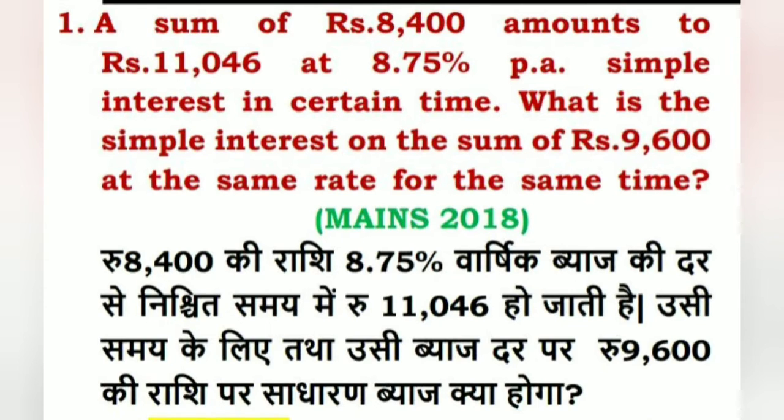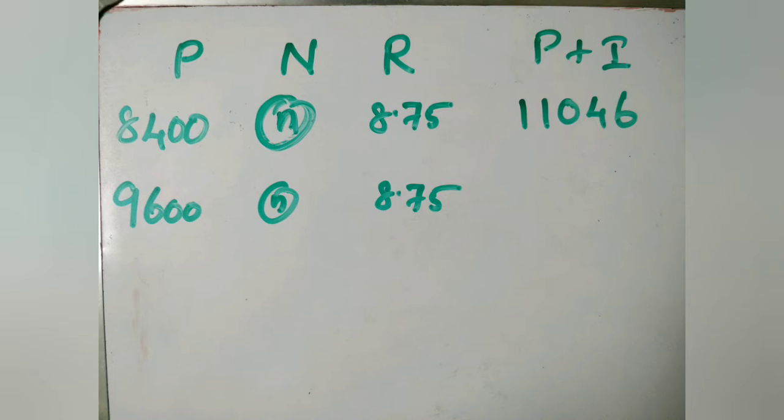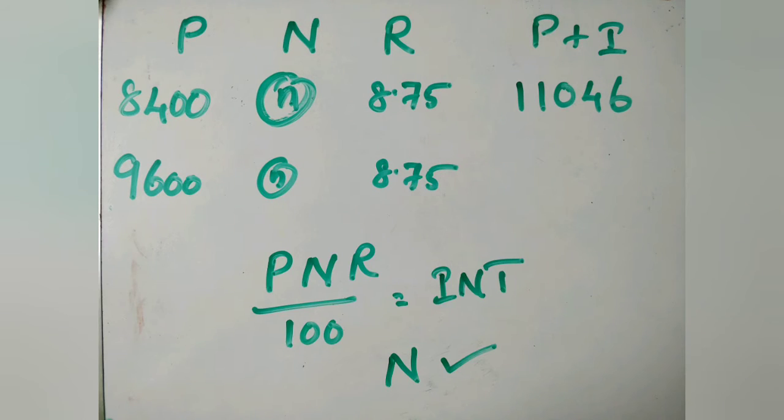For this question, Rs.8,400 for a certain period at 8.75% gives a total amount of Rs.11,046, where the interest comes to Rs.2,646. The traditional approach would be identifying n, the time period.